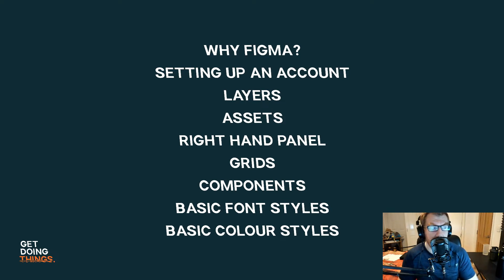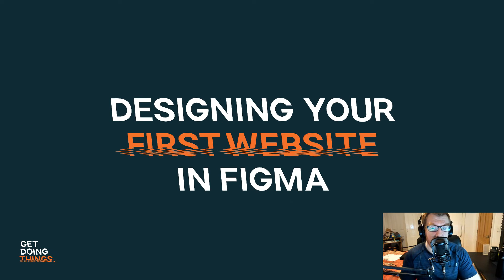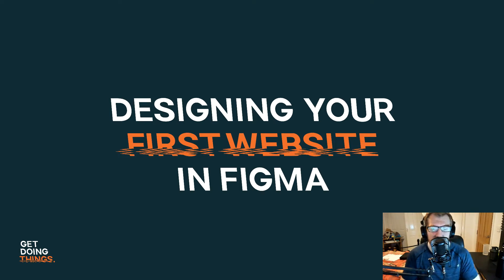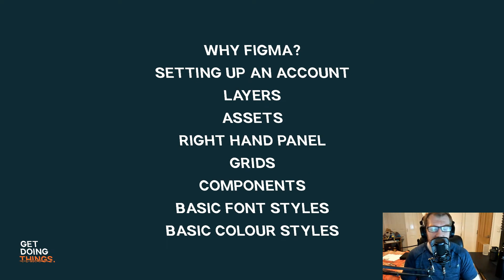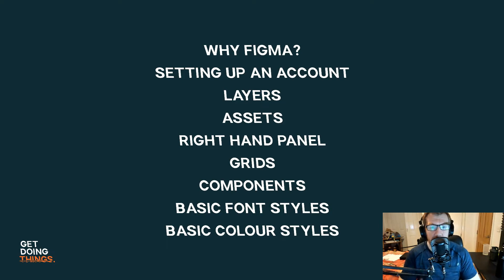By the way, if you're wondering why the font is kind of back the other way — opposite italics — that's what's called Backslant. It's a new font I've just found that's really cool, that I've started using on everything, and you can see my logo in the bottom corner — I've started using it there too. Anyway, let's get to Figma.